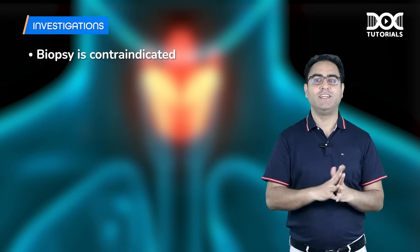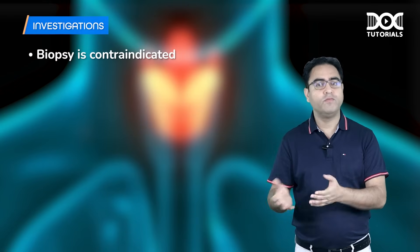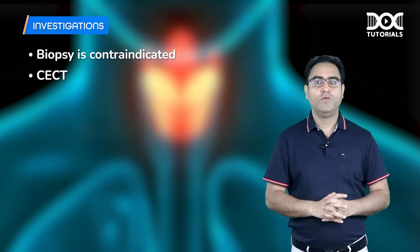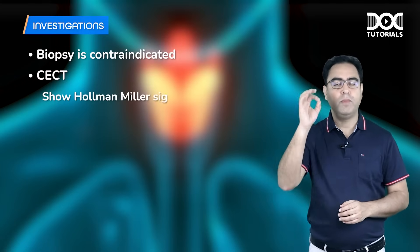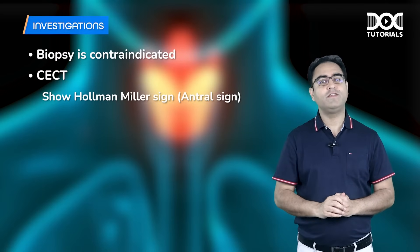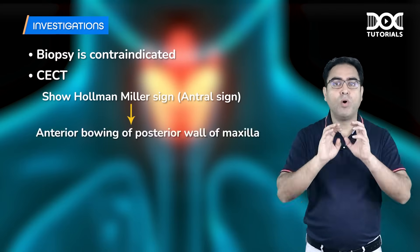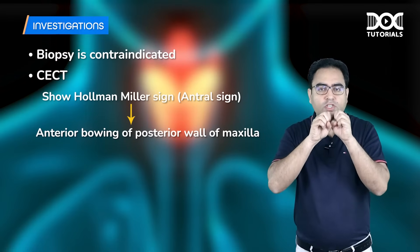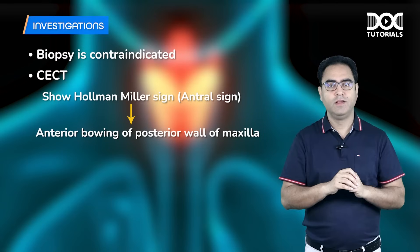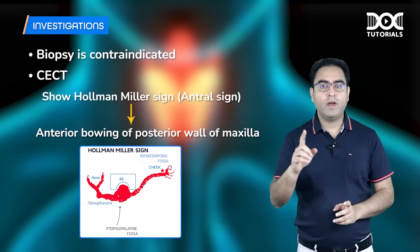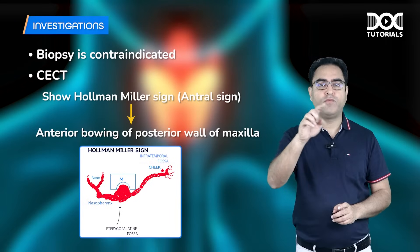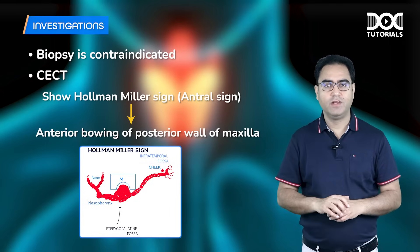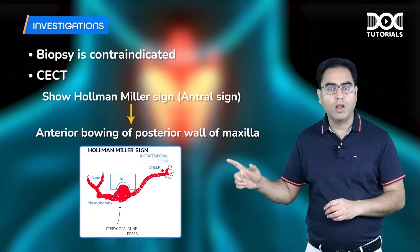For investigations: number one, biopsy is contraindicated — it is a very vascular tumor. Number two, contrast-enhanced CT shows the Holman-Miller sign (antral sign): anterior bowing of the posterior wall of the maxilla. The tumor pushes the posterior wall of the maxilla forward as it grows into the pterygopalatine fossa.